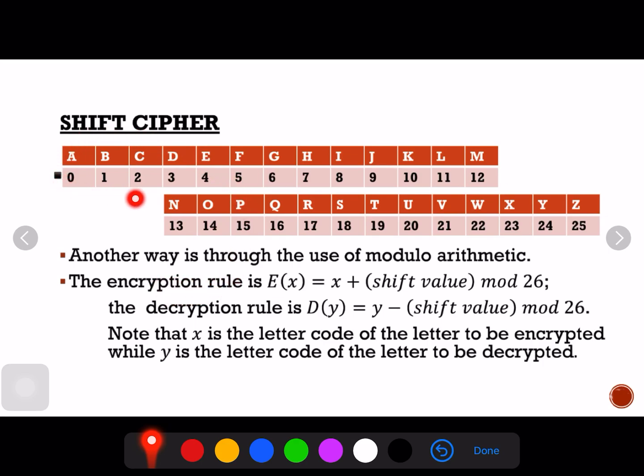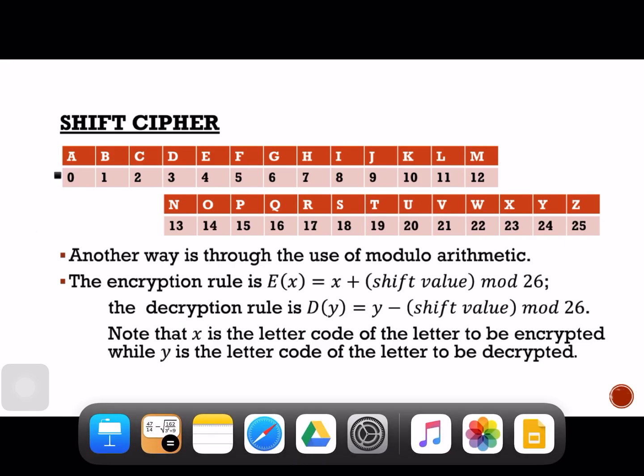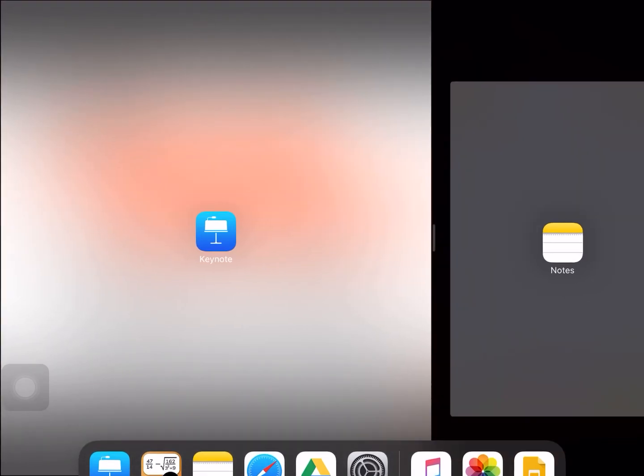Before we go to encrypting part, let's have here first the letter codes of the English alphabet. We have here A has a letter code of zero, B is one, C is two, D is three and the rest here.